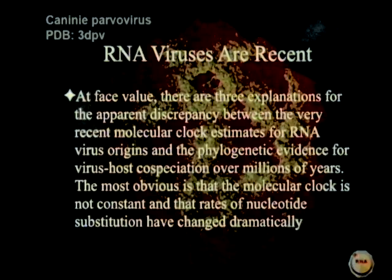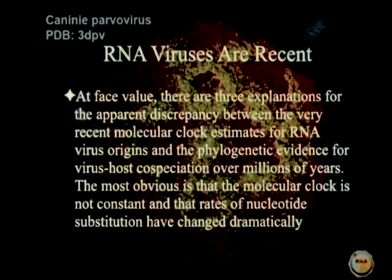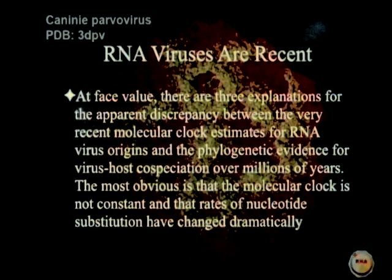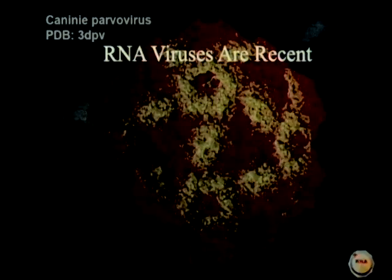At face value, there are three explanations for the apparent discrepancy between the very recent molecular clock estimates for RNA virus origins and the phylogenetic evidence for virus-host co-speciation over millions of years. The most obvious is that the molecular clock is not constant, and the rates of nucleotide substitution have changed dramatically. That's proposal number one.